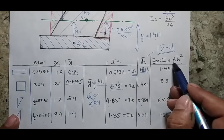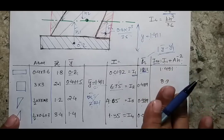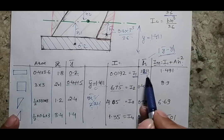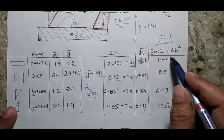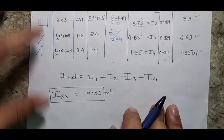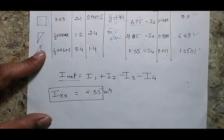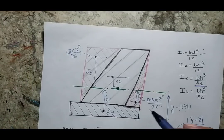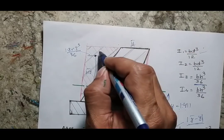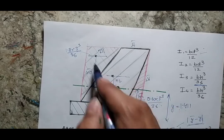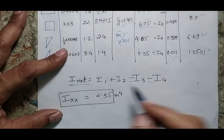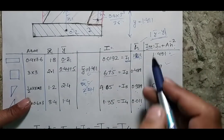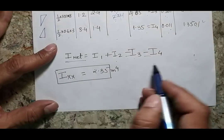The final column of the table applies the parallel axis theorem I + A·h̄² for each of the four sections. Once all four transferred moments of area are calculated, the net moment of area is: I_net = I1 + I2 − I3 − I4, remembering that sections 3 and 4 (the triangles) must be subtracted since they are not physically present. The final answer comes out to 2.35.